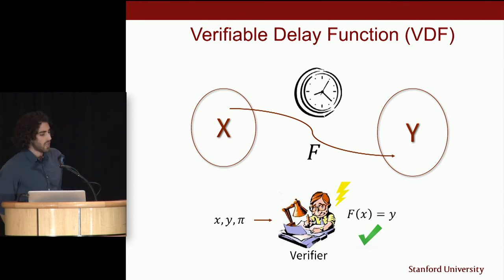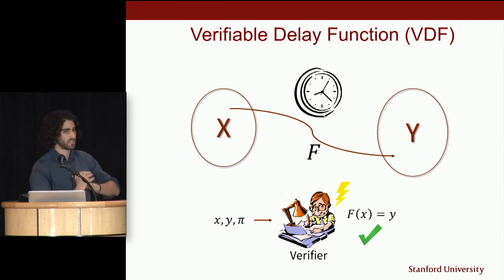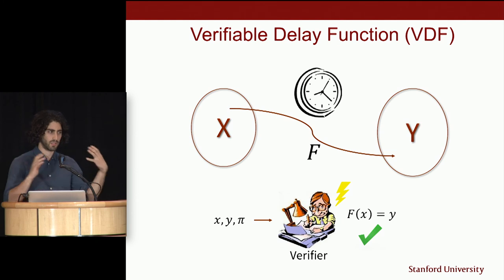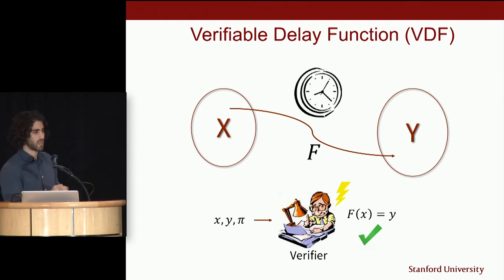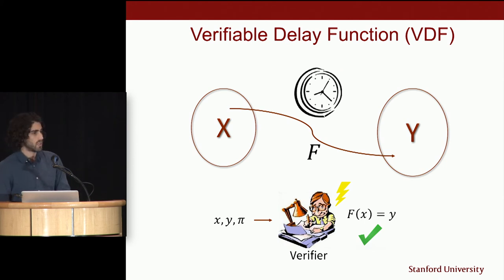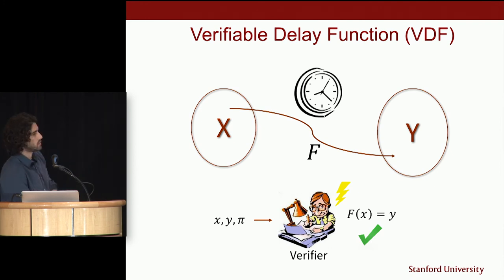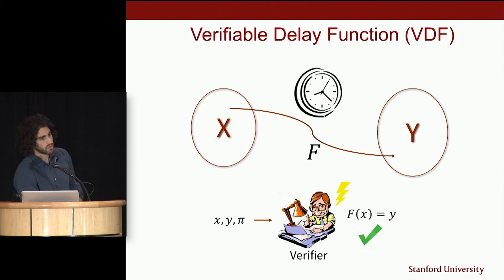Informally, a verifiable delay function goes from some space X to some space Y, but it's a function that takes a long time to compute — not just in terms of computational complexity, but in terms of the actual wall clock time to derive an output on a given input x. On the other hand, given an output in Y and perhaps a short proof along with a pre-image X, it should be easy to verify very quickly.